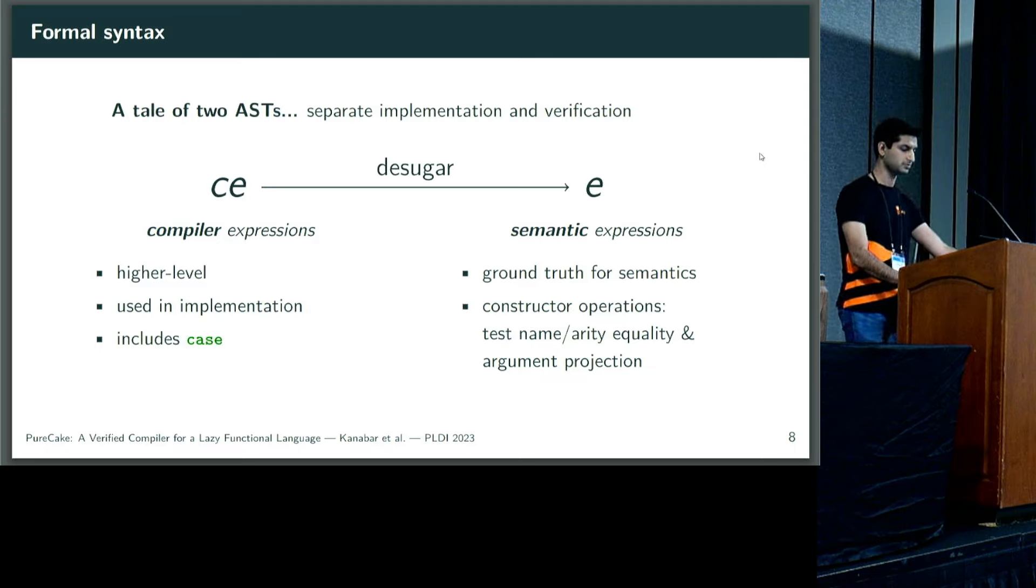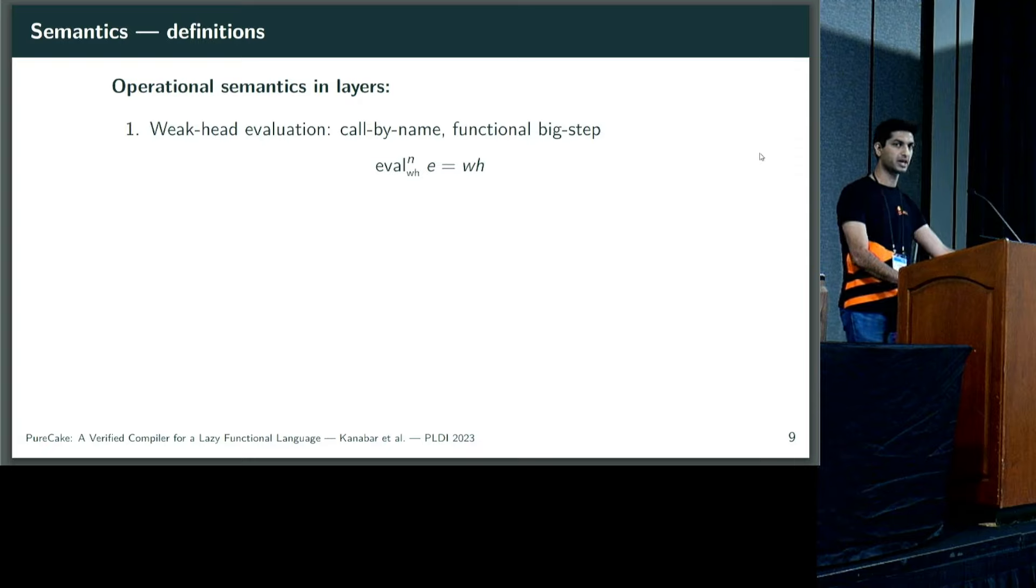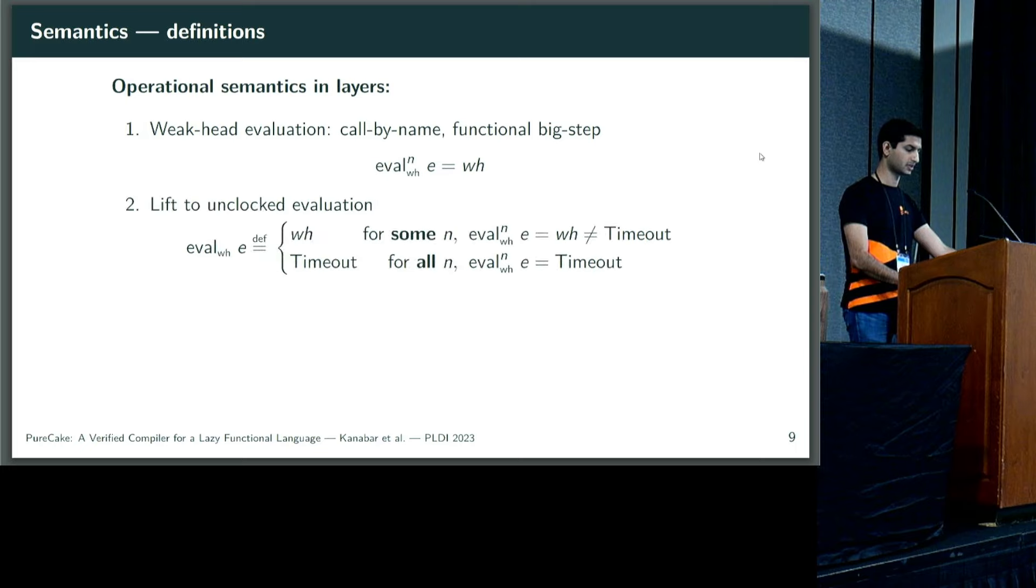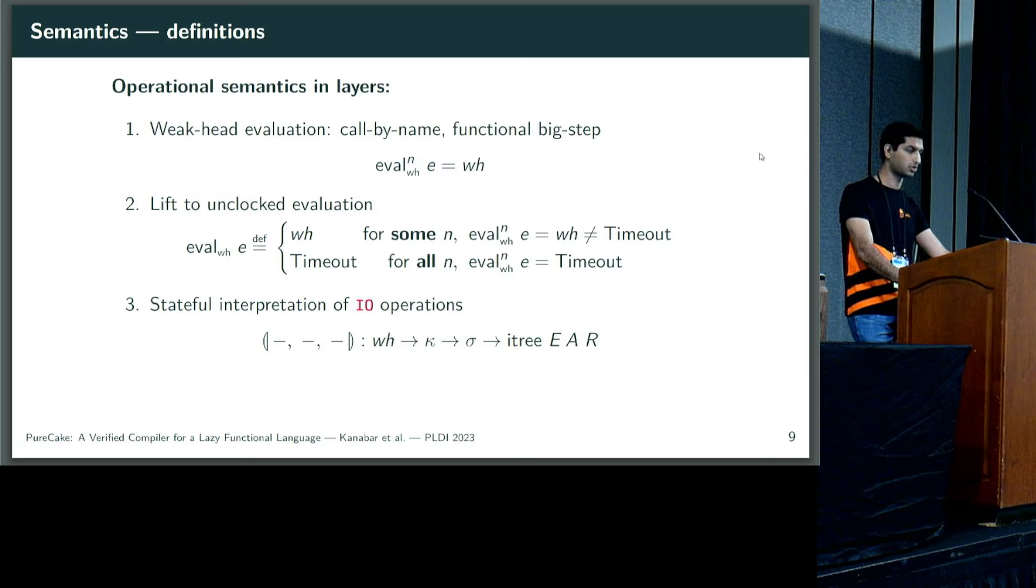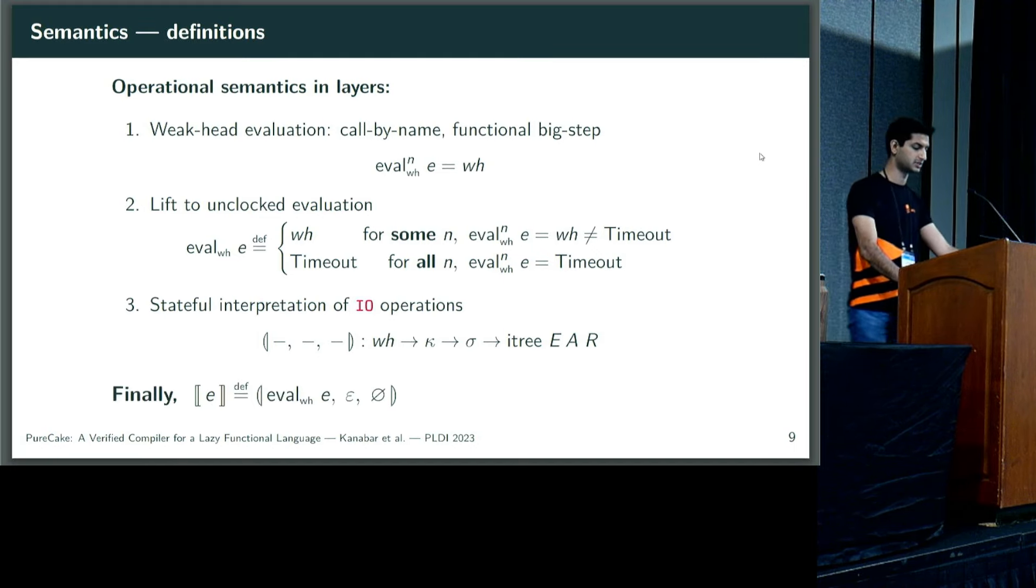Our operational semantics is defined in three layers. The first is weak-head evaluation in the functional big step style. That is a call by name, clocked or fueled recursive interpreter. It tries to produce a weak-head form from an expression, but it might run out of clock and so time out. We lift this to unclocked evaluation using classical quantification in HOL4's logic. The unclocked evaluation of an expression E is either a weak-head form if the clocked evaluation can produce that without timing out, or it must be the case that the clocked evaluation always times out, and so the unclocked one does too. Third and last, we statefully interpret IO operations. Each IO operation in the IO monad is considered a weak-head form, and now we have to model their sequencing and stateful and IO effects. So we use a stack machine with mutable store. It accepts a weak-head form, a continuation stack kappa, mutable store sigma, and produces a variant of interaction trees which are embeddable in HOL4, and will serve as our semantic domain. The top level semantics of an expression is a combination of these. It's the stateful interpretation of the weak-head form in an empty continuation stack and empty initial store.